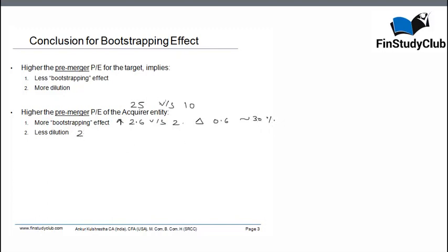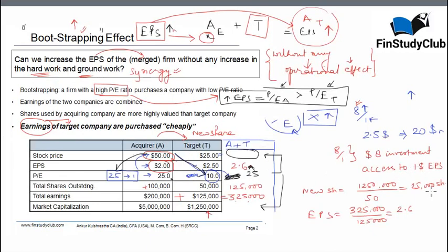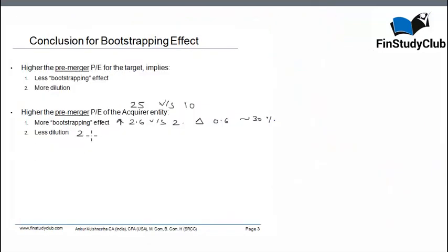There is no doubt there has been some dilution. There are 25,000 new shares issued and now there are total 125,000 shares. Because of this, the new entity has a new owner to the extent of 20%. So the existing owners of the acquirer have only 80% stake now. There is a dilution of 20%.